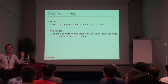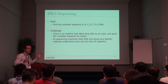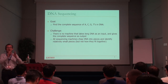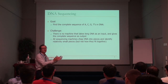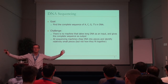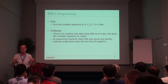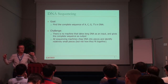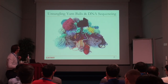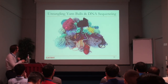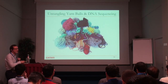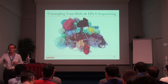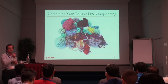The challenge is there is no machine today that takes long DNA as input and gives the entire sequence as output. That makes this a huge computational challenge, because all sequencing machines chop up the DNA into pieces and identify relatively small pieces, but they do not tell you how those pieces fit together. I like the analogy of yarn balls — you have these yarn balls and need to untangle them, but there's no way to untangle a single ball; you chop all of them together and need to figure out where the different pieces map.